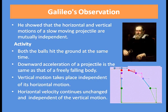The first breakthrough in the description of projectile motion was given by Galileo. He showed that the horizontal and vertical motion of a slow moving projectile are mutually independent. To understand this, let us do an activity.